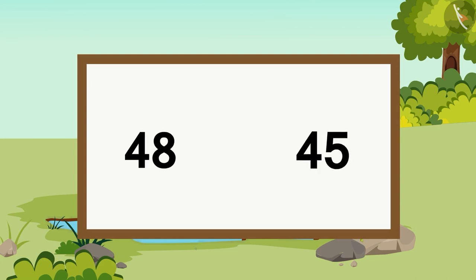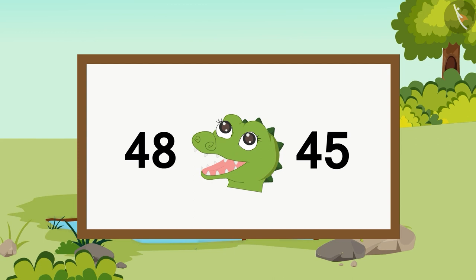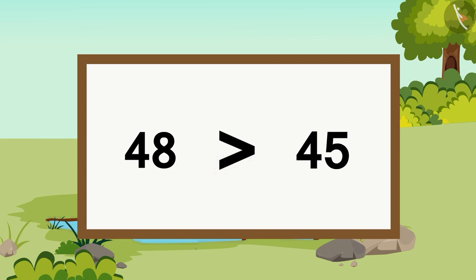Now, let's imagine the numbers 48 and 45 are given to you. Children, remember that the number that comes later while counting is the bigger number. When we count, 48 comes after 45. So Crocs' mouth opens towards the bigger number. This is why we use the more than symbol and write it like this, to show that 48 is bigger than 45.